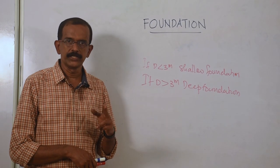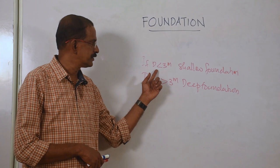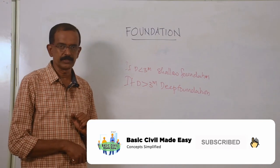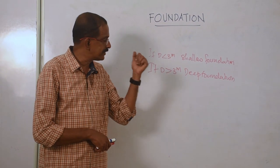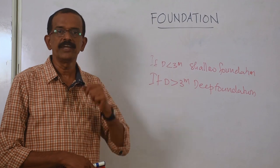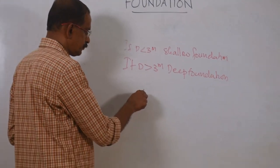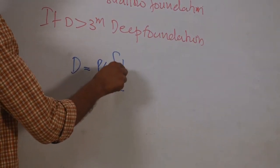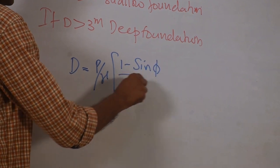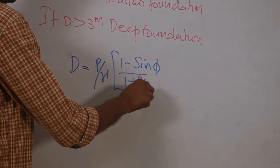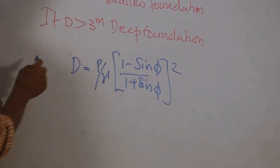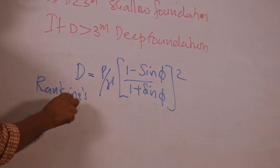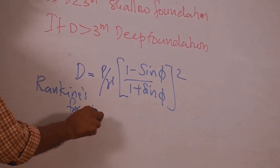If the depth of foundation is less than 3 meters, it is called shallow foundation. If the depth is greater than 3 meters, it is called deep foundation. To find out that depth, there is a formula — Rankine's formula — to find the depth of foundation D, which is: D = P/γ × [(1 − sin φ)/(1 + sin φ)]².